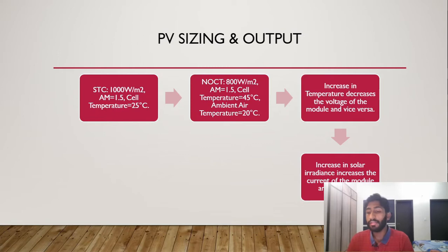Just have a look at that. The increase in temperature, as we know, is inversely proportional to the voltage. So if increase in temperature decreases the voltage, and vice versa for solar irradiance. If you increase it, the current of the module is going to increase as well because the intensity is higher.